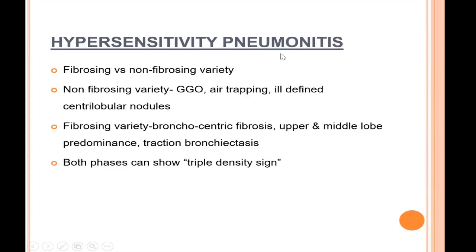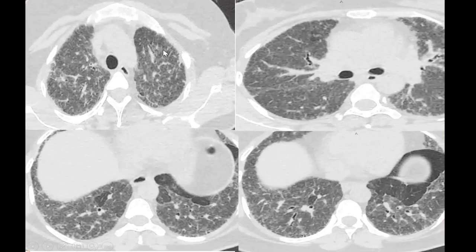In non-IPF diagnosis, hypersensitivity pneumonitis is the most common type. In initial stages it shows ground glass opacity, areas of air trapping, and ill-defined centrilobular nodules. As the disease advances, there is progressive bronchocentric fibrosis involving predominantly the upper and middle lobes. This case of hypersensitivity pneumonitis shows diffuse areas of ground glass opacity, areas of air trapping appearing as dark areas in between, and developing intralobular septal thickening and reticulations — indicating a sub-acute phase with ground glass, air trapping, and early fibrosis.